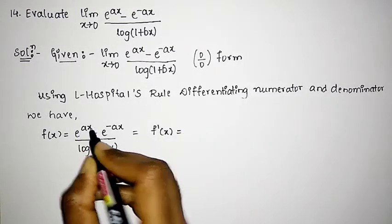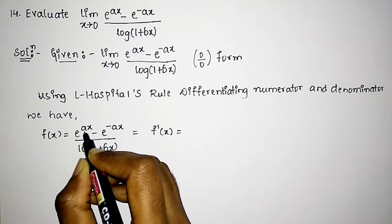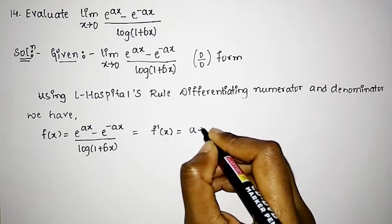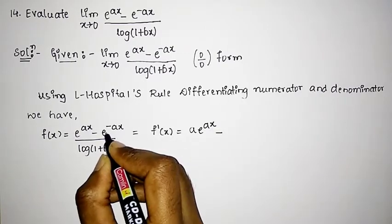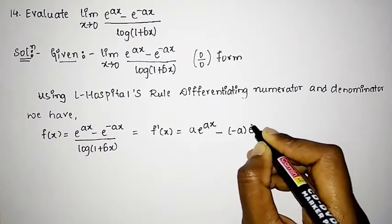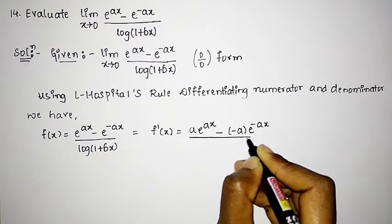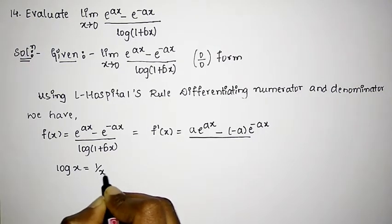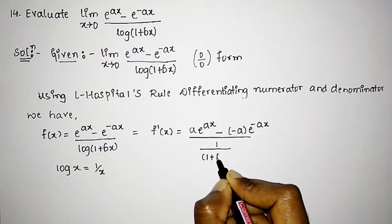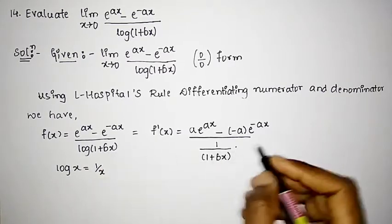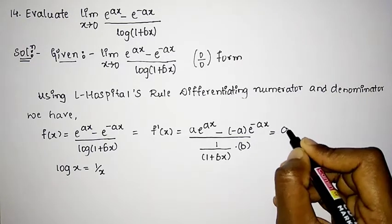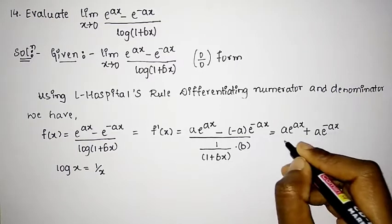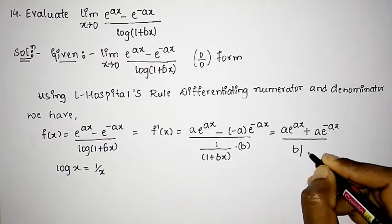The differentiation of e to the power x is e to the power x. So differentiation of e raised to ax is a into e raised to ax. Then minus: differentiation of e raised to minus ax is minus a into e raised to minus ax. For the denominator, differentiation of log(1 plus bx) is 1 divided by 1 plus bx, and differentiation of bx is b. So we get: a into e raised to ax plus a into e raised to minus ax, whole divided by b divided by 1 plus bx.